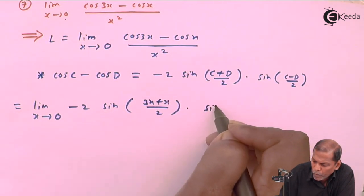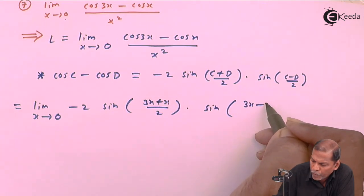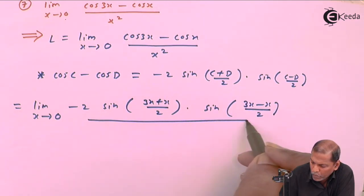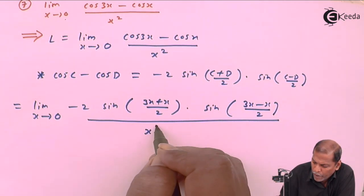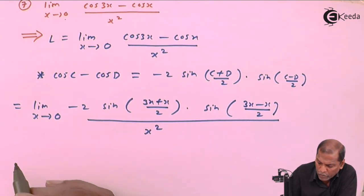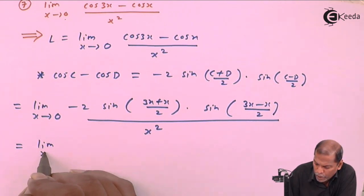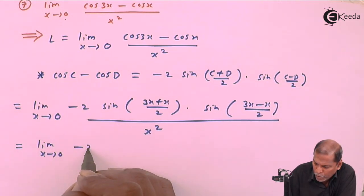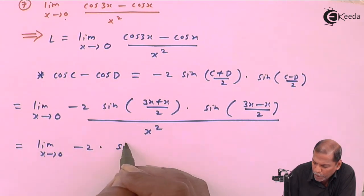and whole thing divided by x square. So that equals limit x tends to 0, minus 2 into sine, now 3x plus x